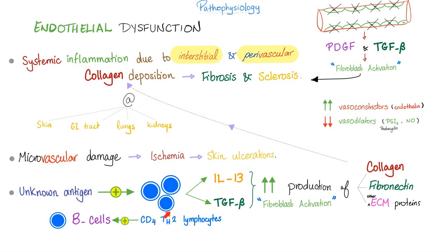T helper 1 will help their sisters — they help the cytotoxic T lymphocytes. But T helper 2 will help the B lymphocytes. When they help the B lymphocytes, those become plasma cells. Plasma cells secrete antibodies. Leukocytes interact via interleukin — the internet of the leukocytes. In this case, it's interleukin-13 and TGF-beta, which activate the fibroblast. The fibroblast deposits collagen, fibronectin, and other extracellular matrix proteins everywhere.